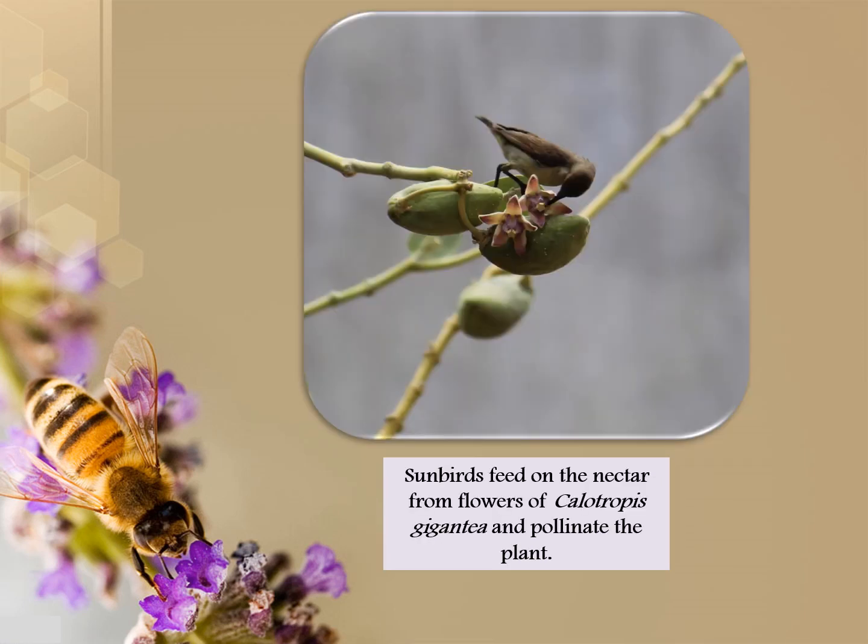The sunbird feeds on nectar from the flowers of Calliotropes gigantea and pollinates the plant.